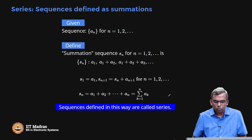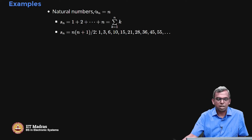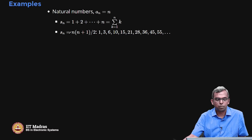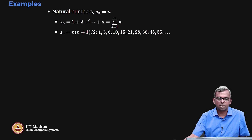Let us look at examples. Here is the natural numbers sequence: a_n equals n, and the series corresponding to it is 1 plus 2 plus ... plus n, written as summation k equals 1 to n of k. It turns out this sum equals n(n+1)/2. You may have studied this formula before, and there is a very simple proof for it. So 1 plus 2 plus dot dot dot plus n equals n(n+1)/2 — a very famous formula, very easy to prove.